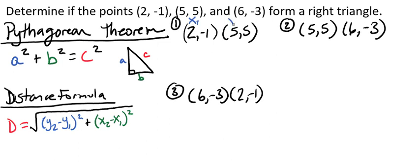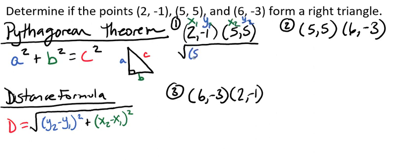Here we have x₁, x₂, y₁, and y₂, so we'll go ahead and plug those in. We're going to have √((5 − (−1))² + (5 − 2)²). We plug that into our calculator to get the square root of 45. We're not going to worry about reducing that — we'll just leave it and move on to our second distance.